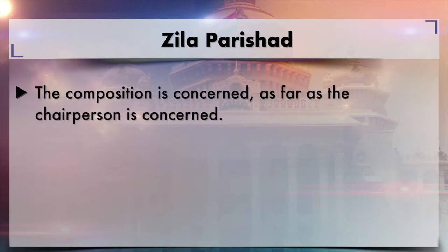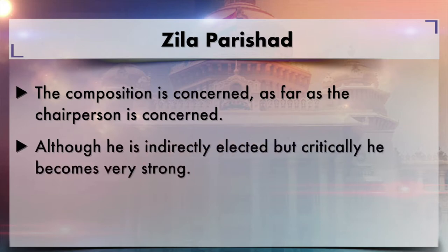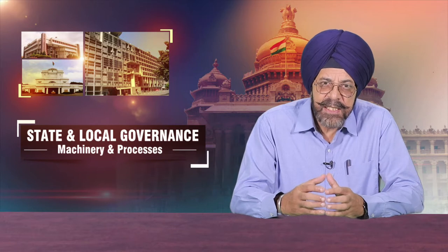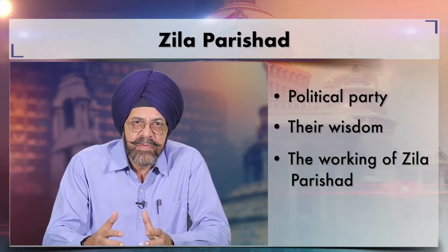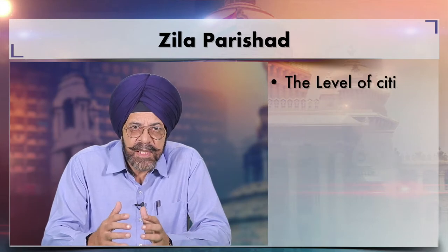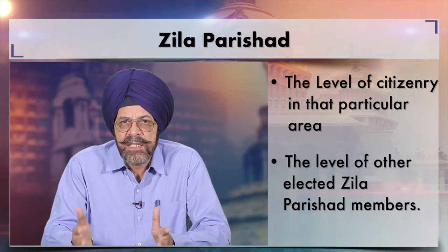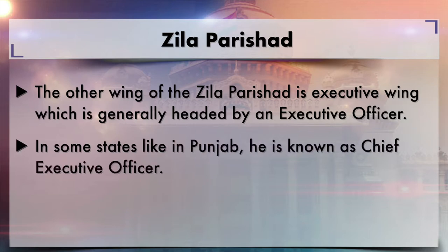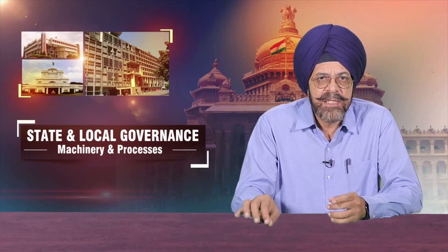As far as the chairperson is concerned, although he is indirectly elected, he becomes a critically strong figure. He is the head of the elected district level body and may sometimes be in conflict with elected MLAs or MPs. This depends on factors like political party affiliation, their wisdom, the working of the Zilla Parishat, and the level of other elected members. The other wing of Zilla Parishat is the executive wing, generally headed by an executive officer — in states like Punjab, known as the chief executive officer.